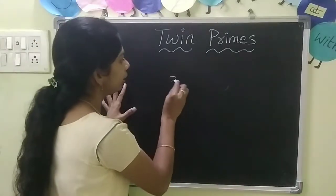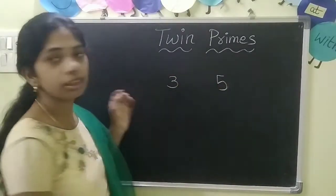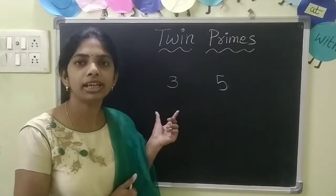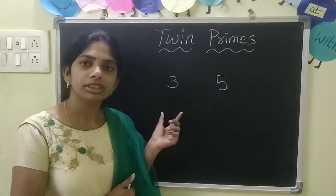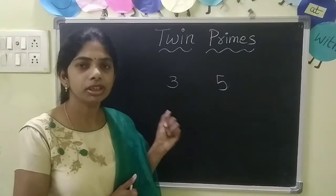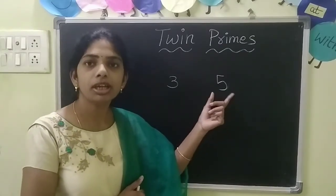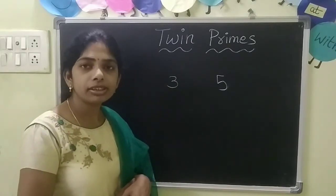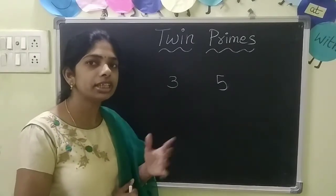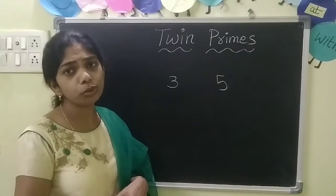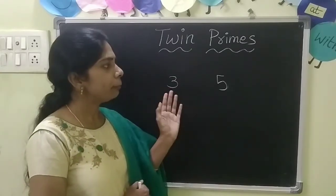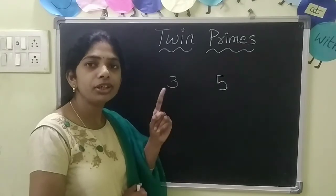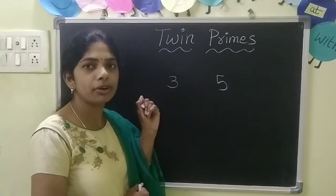So let's take 3 and 5. Is 3 a prime number? Yes, because it has one and itself as factors. And 5 is also a prime number, because how many factors does it have? One and itself only. So for these prime numbers, there should be one and only one composite number.